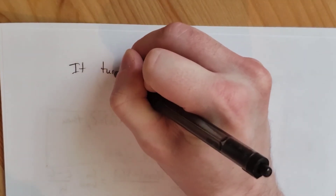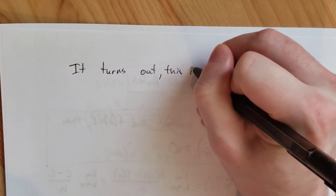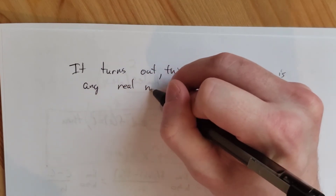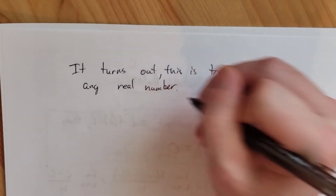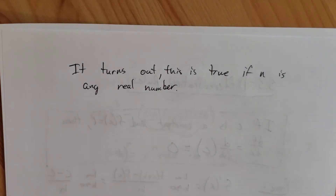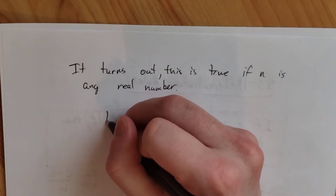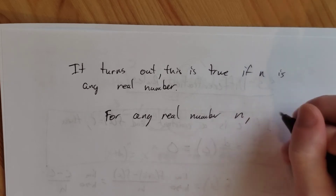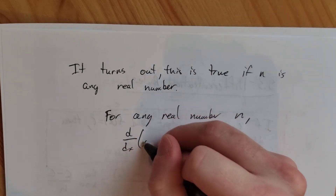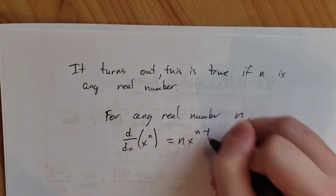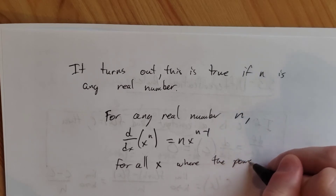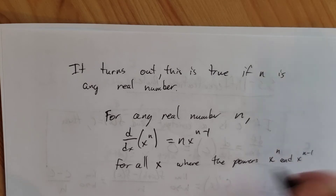With that note, I'd like to point out that it turns out this is true if n is any real number, with one small caveat. We don't have the capability of really proving that right now. The statement for any real n is: the derivative of x to the n is equal to n times x to the n minus 1, for all x where the powers x to the n and x to the n minus 1 are defined.